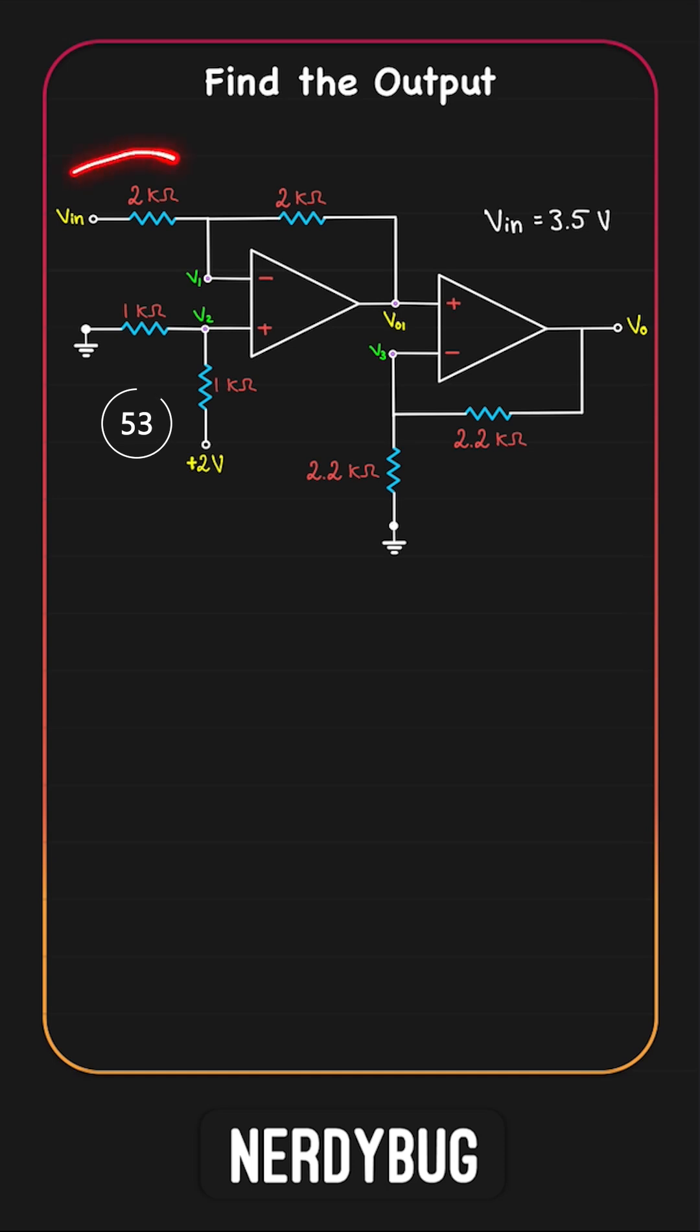You can see that the first stage is nothing but a differential amplifier and the second stage is a simple non-inverting amplifier.